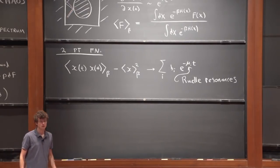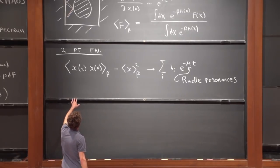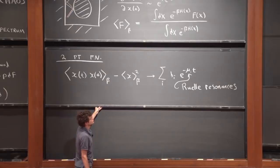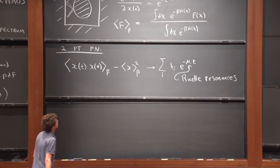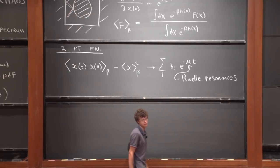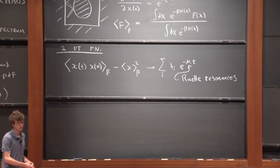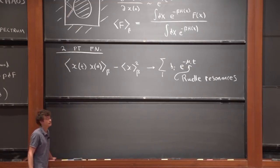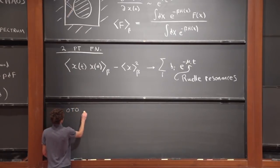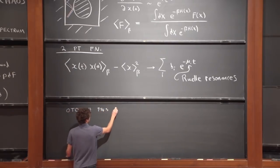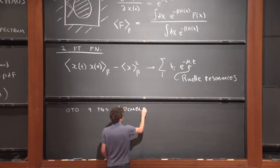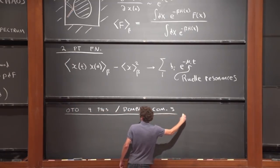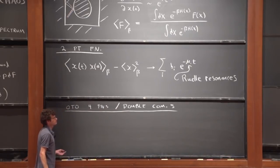Another type of thermal expectation value we'll discuss are out-of-time-order four-point functions, or double commutators. The reason for calling them this will become clearer when we discuss quantum physics, but we can get the idea from a similar quantity in classical physics. Let's imagine computing the expectation value of a derivative of x(t) with respect to the initial condition.